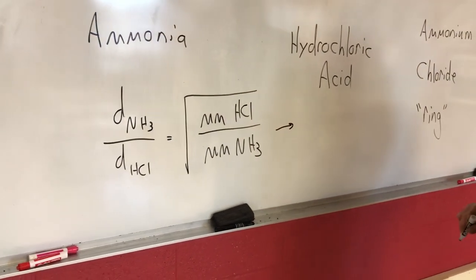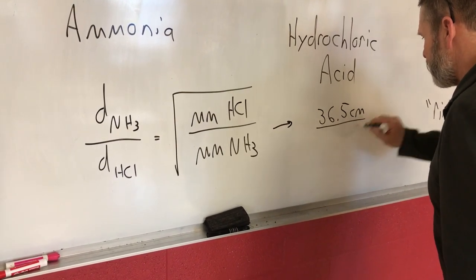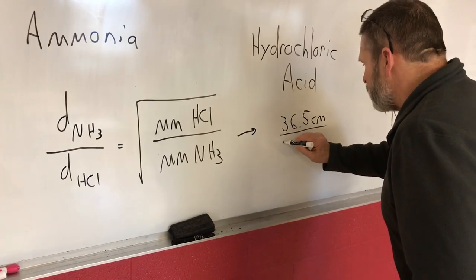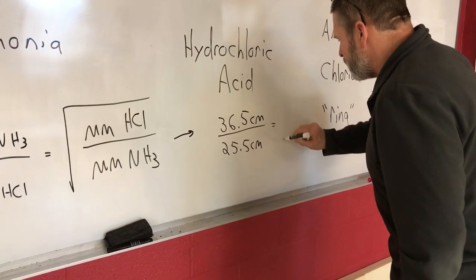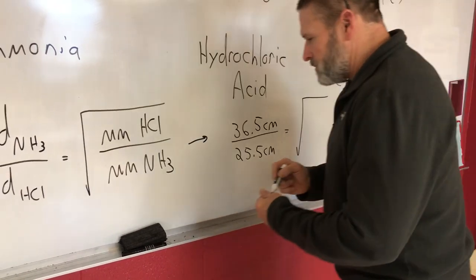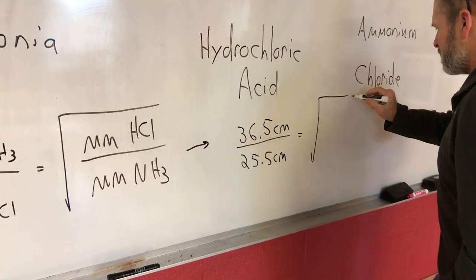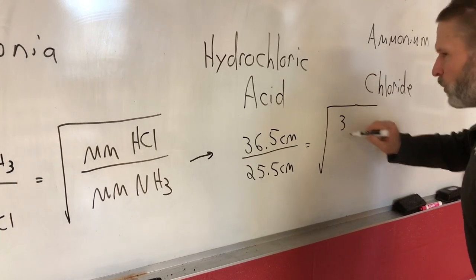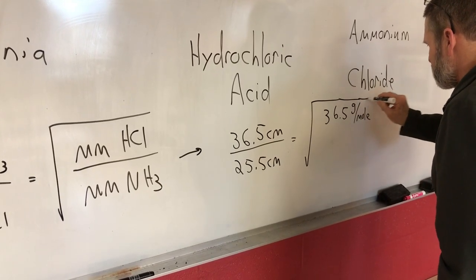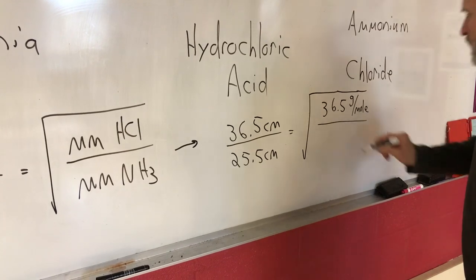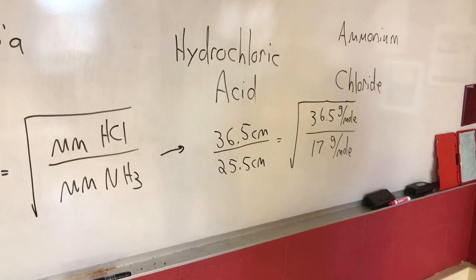Okay, if I just keep going here. Yep, that's fine. We got it. Okay. So, you could have 36.5 centimeters over 25.5. Okay. The theory would be equal to the square root of the molar mass of HCl, which is about 36.5, all over the molar mass of ammonia. Which is about 17.